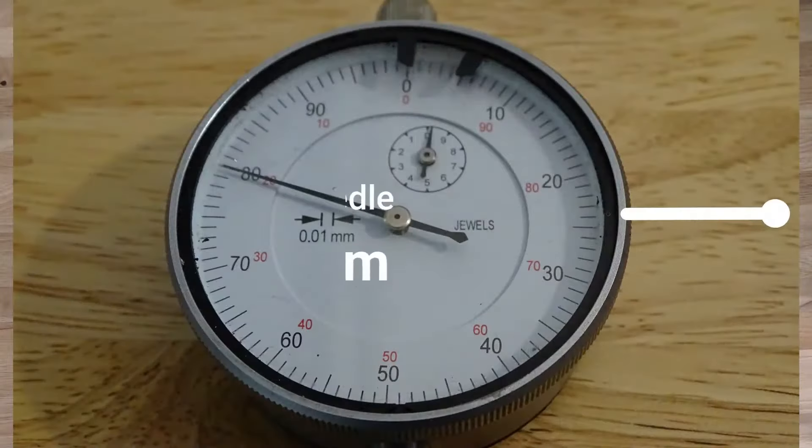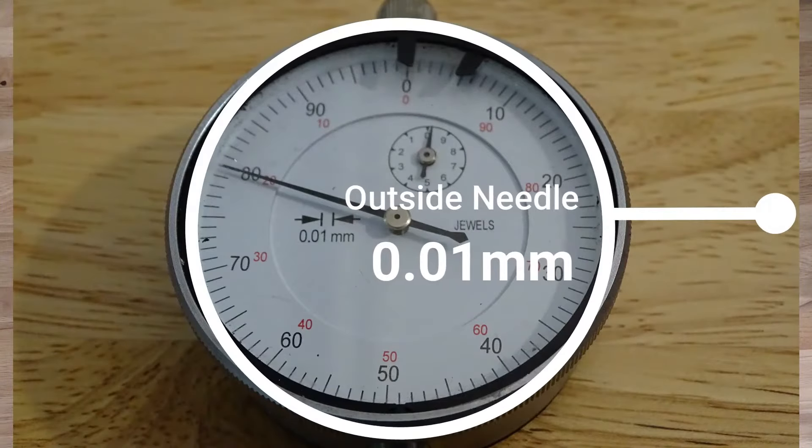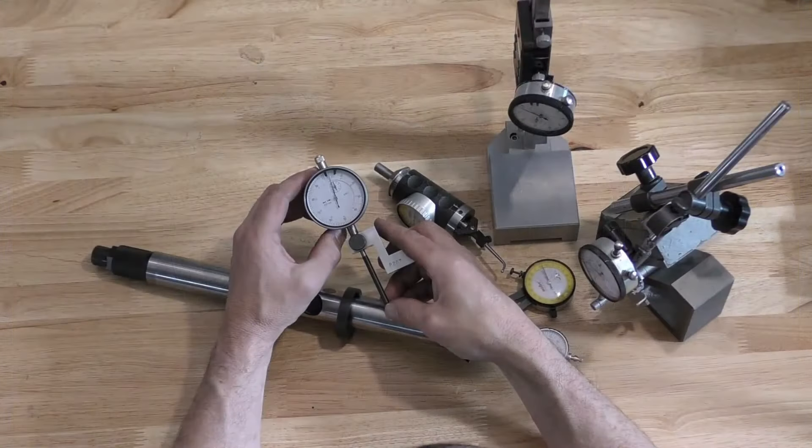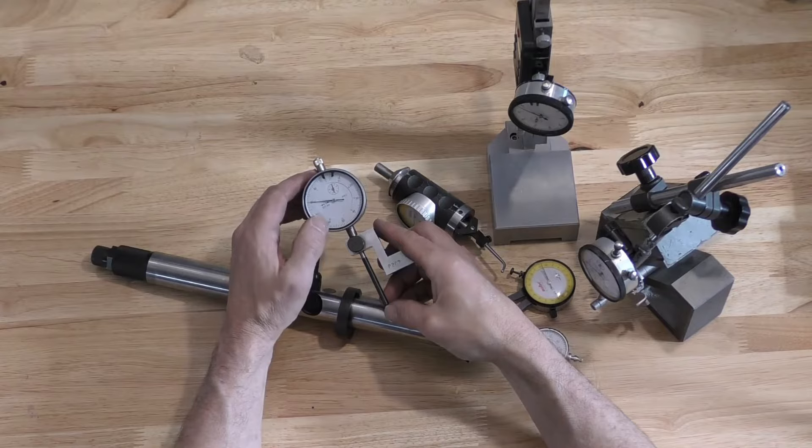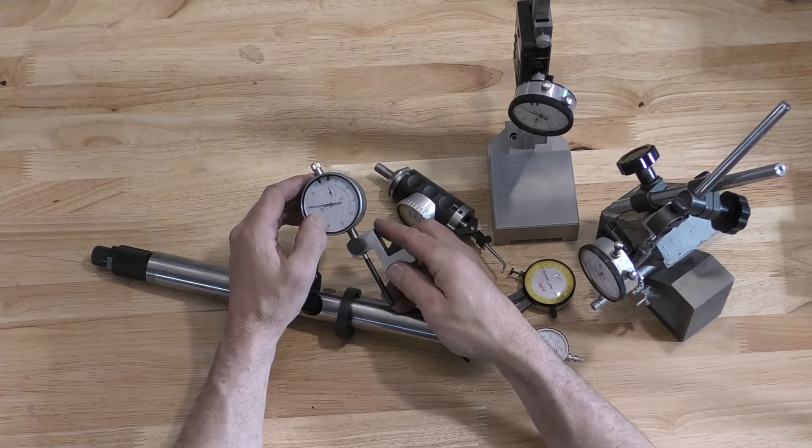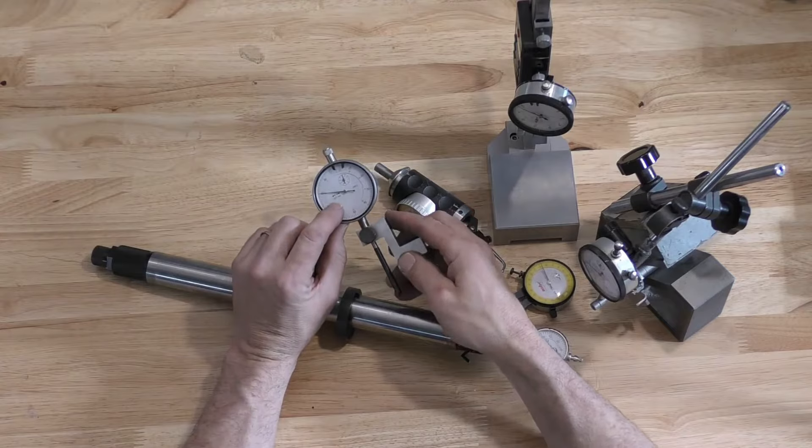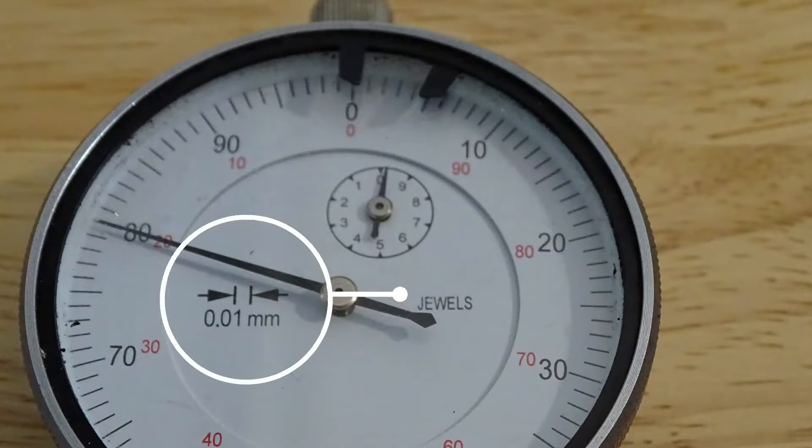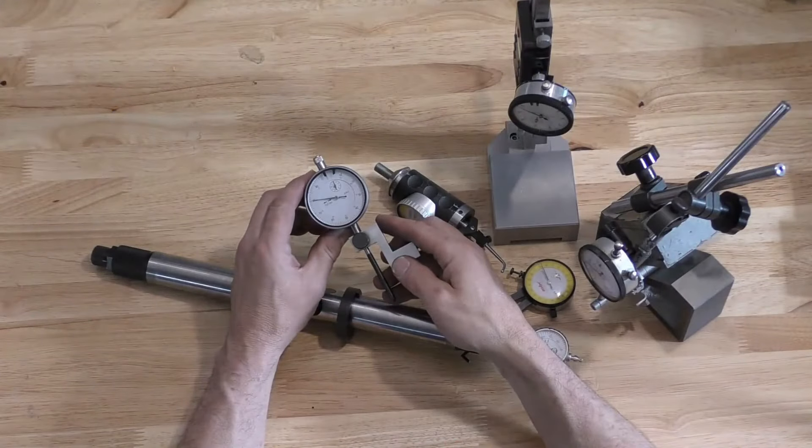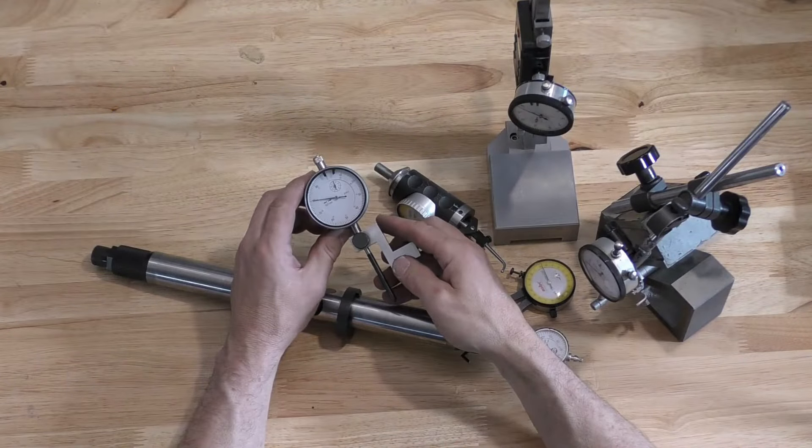The outside needle is measuring in 0.01 of a millimeter increments. So when the needle moves this much we are moving approximately 0.2 of a millimeter. Usually the specification for the dial gauge will be on the face of the gauge. For instance this one is 0.01 and that's the tolerance of the gauge.